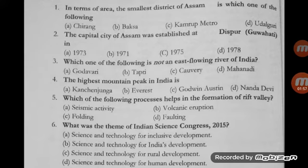The third question: which one of the following is not an east-flowing river of India? Options: Godavari, Tapti, Kaveri, and Mahanadi. The correct answer is option B, that is Tapti — it is not an east-flowing river of India.